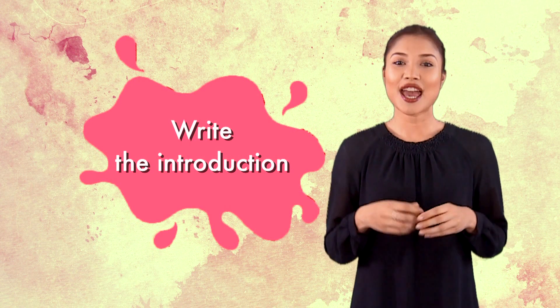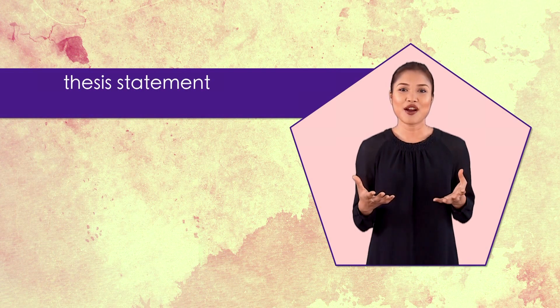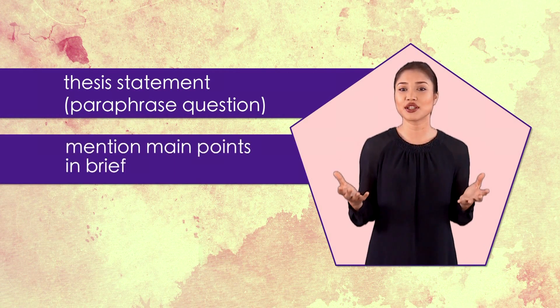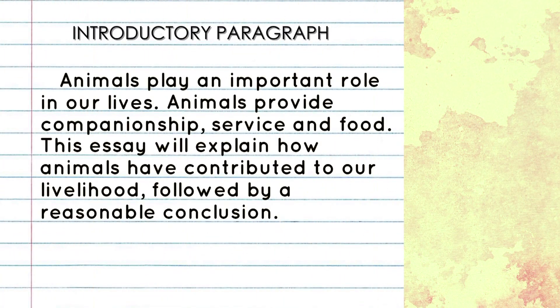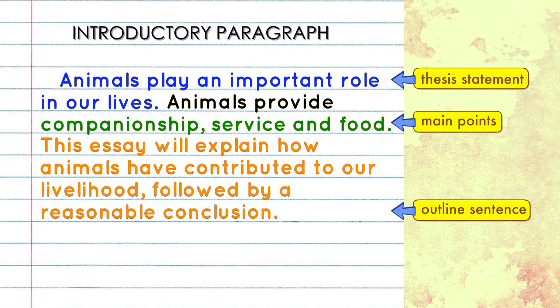Write the introduction. Every introduction should begin with an introductory paragraph. Your introductory paragraph begins with your thesis statement. We usually paraphrase the question as the first sentence in the introduction. Then, in one sentence, briefly mention the main points. Finally, write an outline sentence to explain the structure of your essay. Here is an example of my introduction. Notice how I have paraphrased the question — this is the thesis statement. This sentence briefly mentions my main points, which are companionship, service, and food. This is my outline sentence, where I stated what readers should expect from the main body and conclusion.